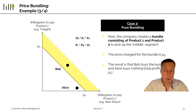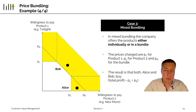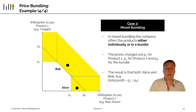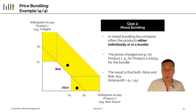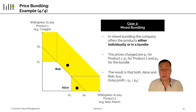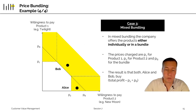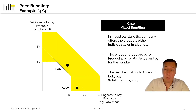Case three is mixed bundling, where everyone gets what they want. Bob is over the diagonal line, so Bob buys the bundle. Alice is over the vertical threshold line, so she buys only book two individually. This is the case where the company makes the most profit.